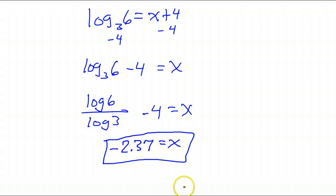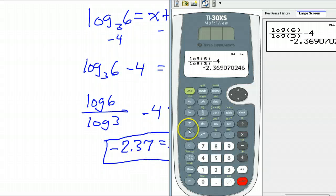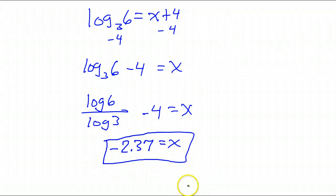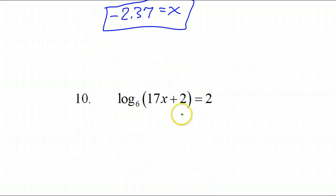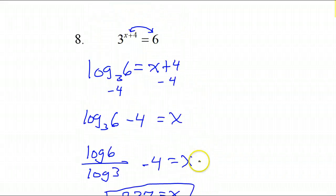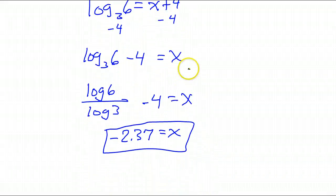Round properly — if you put negative 2.36, you're losing points. All right, that's number 8.